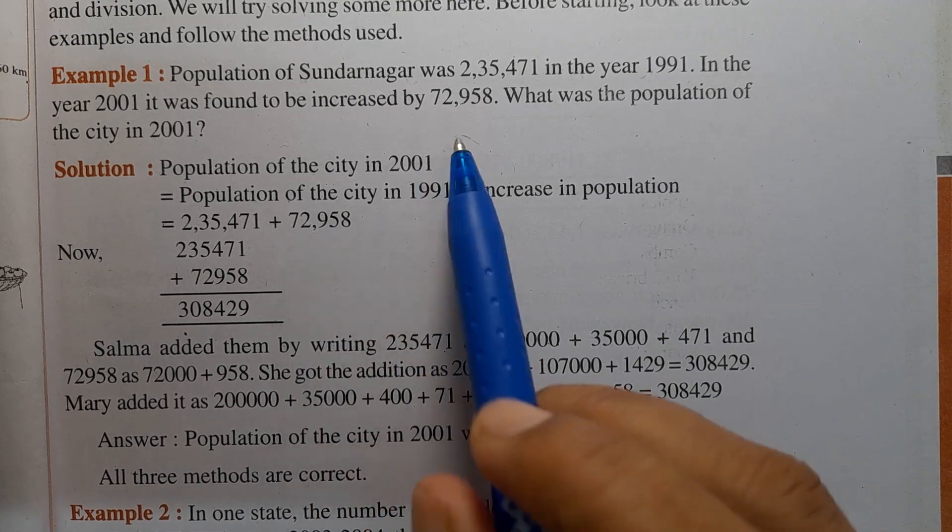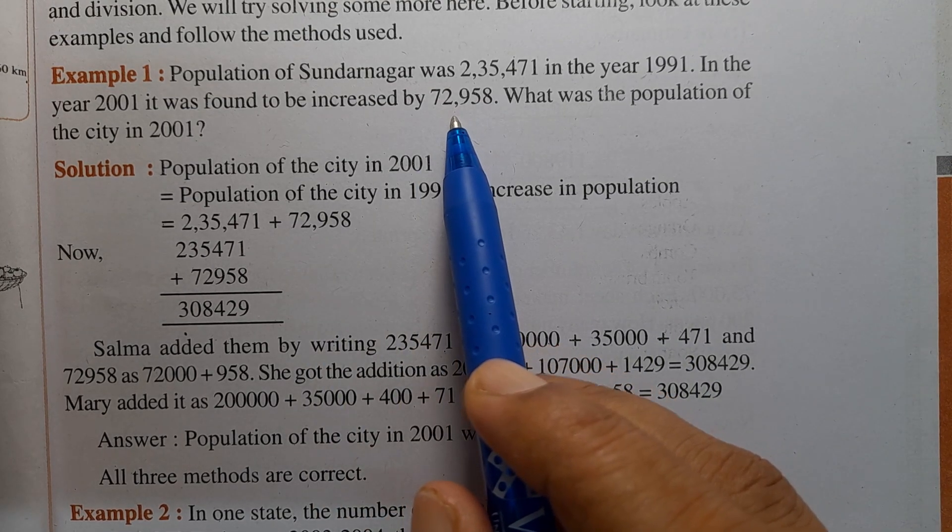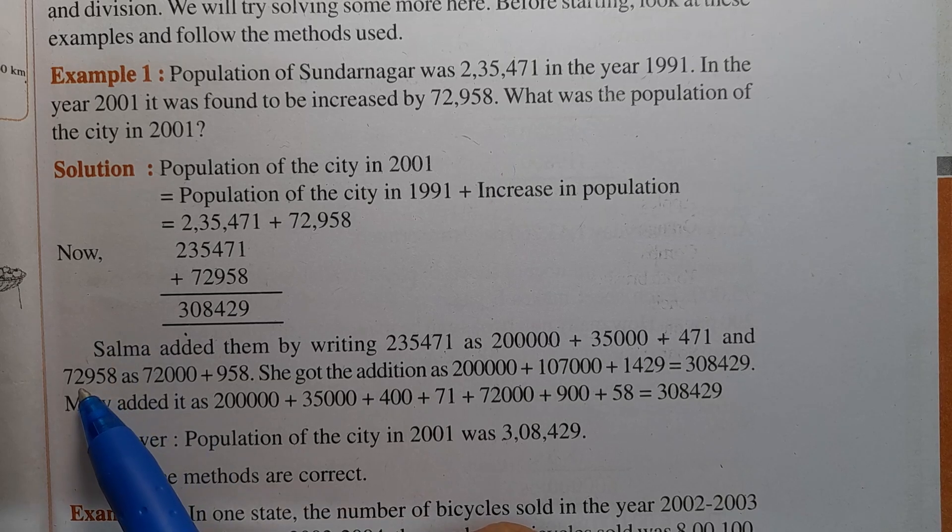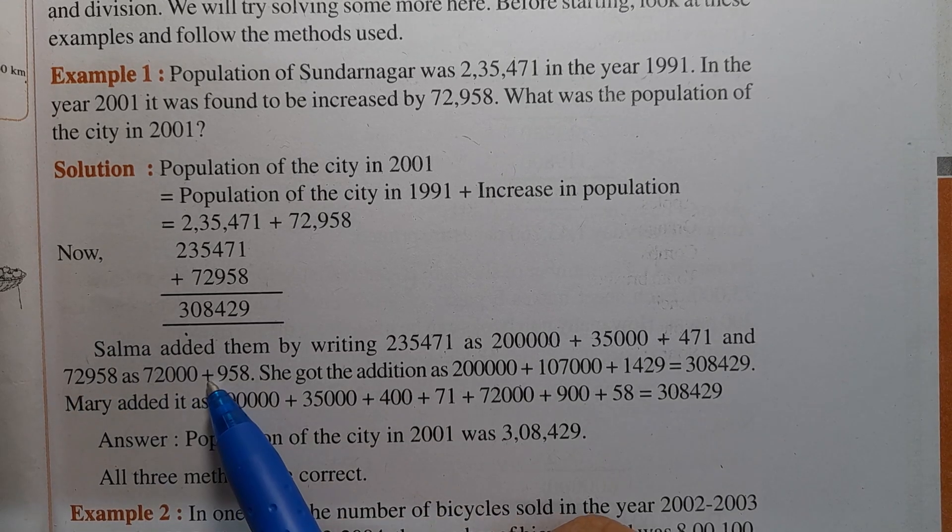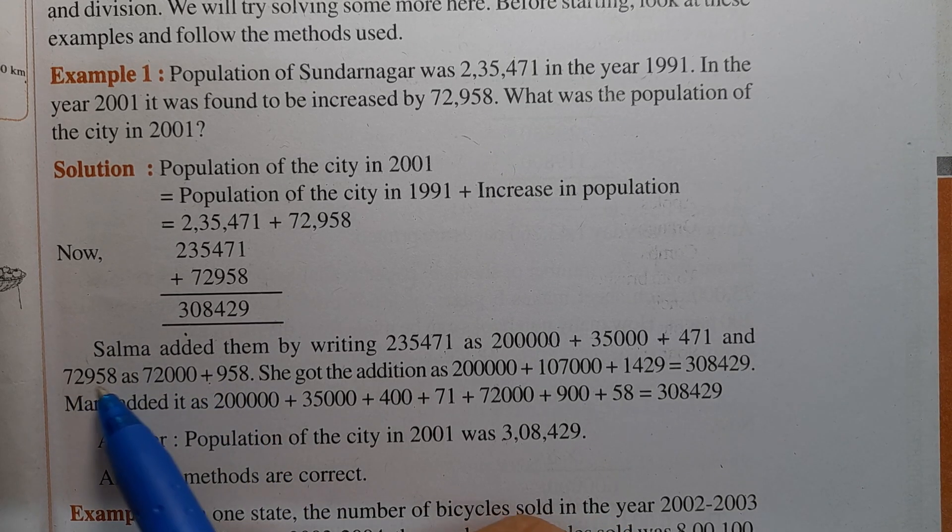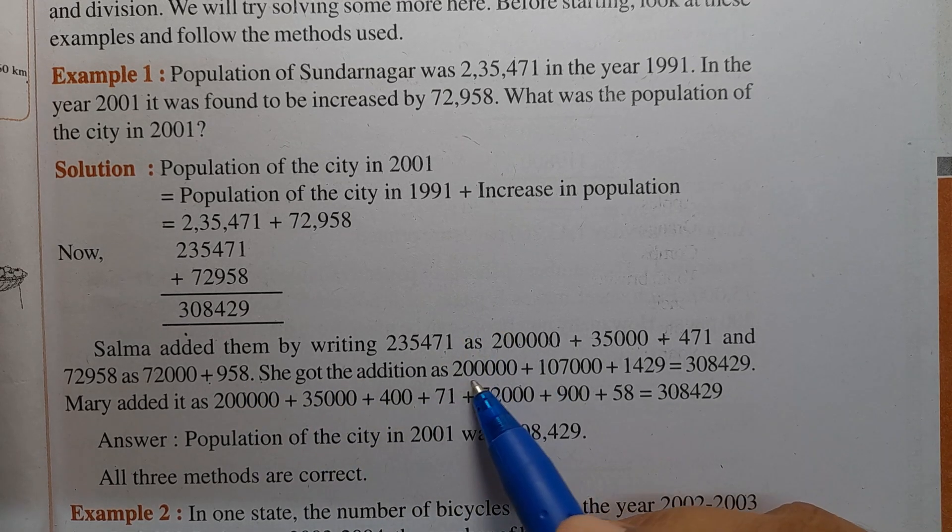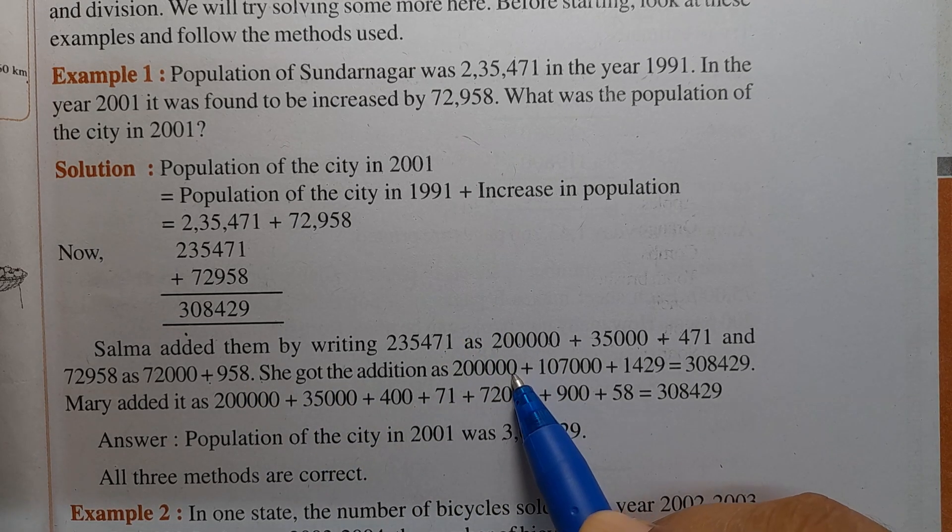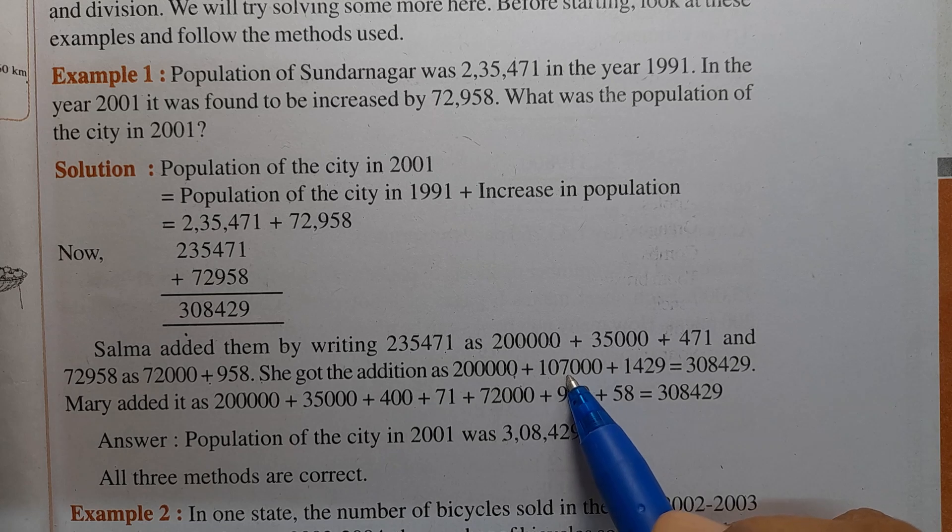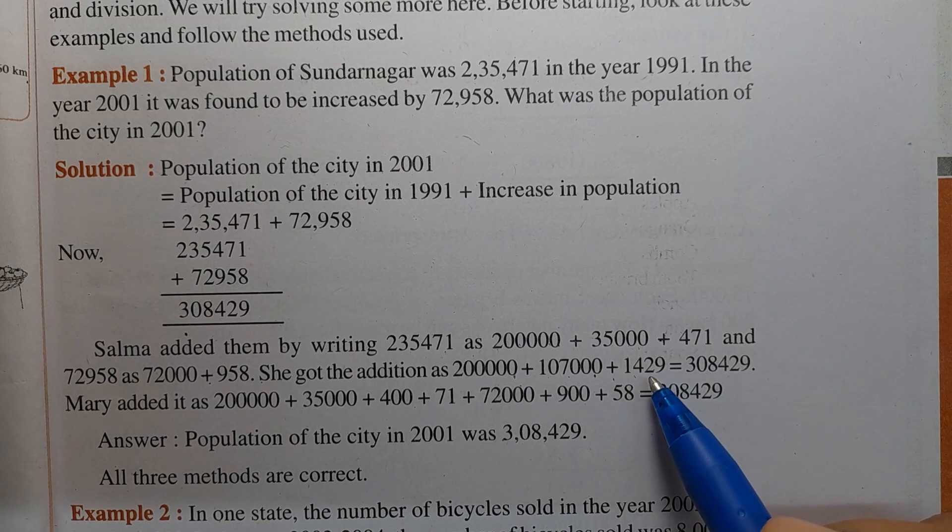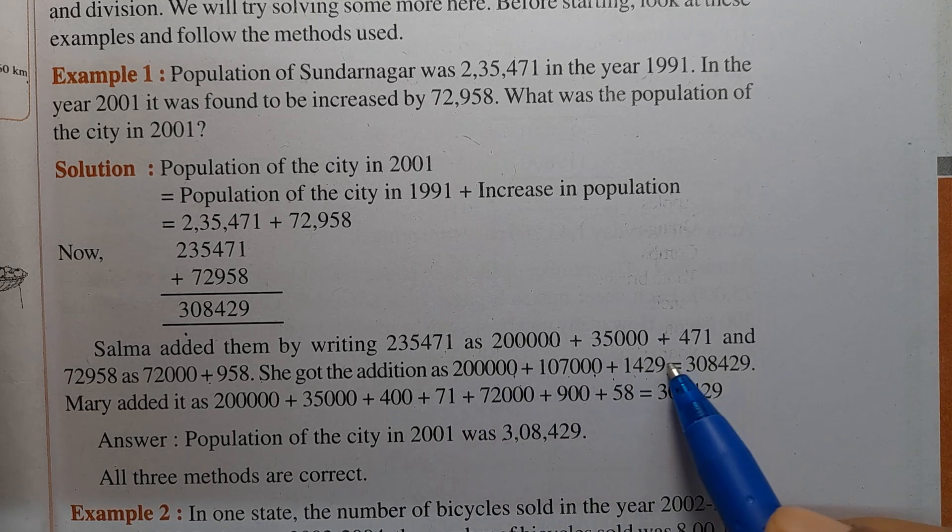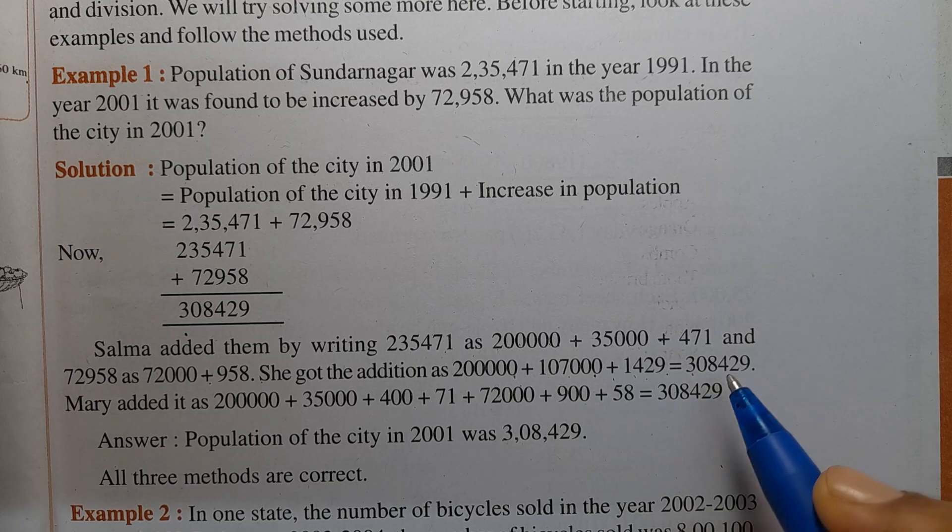Next, the increase of 72,958 was broken down as 72,000 plus 900 plus 58. She added them together and got 3,08,429 as the answer.